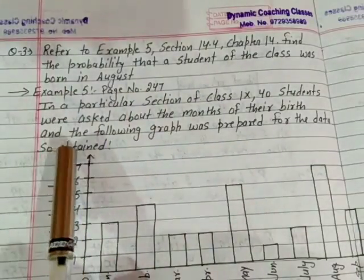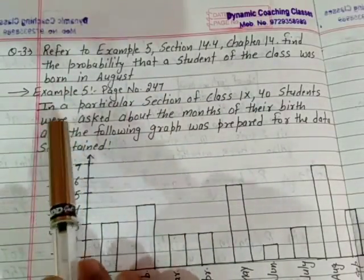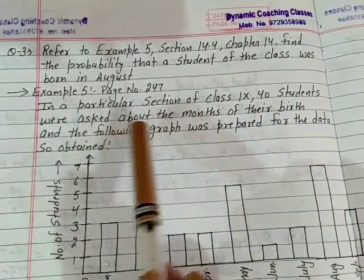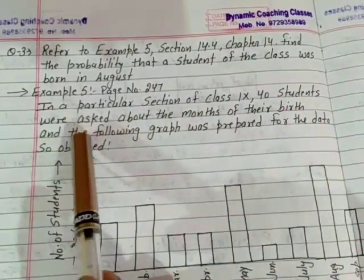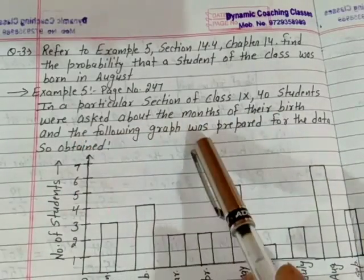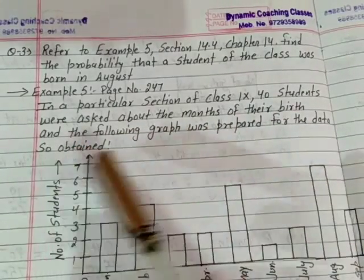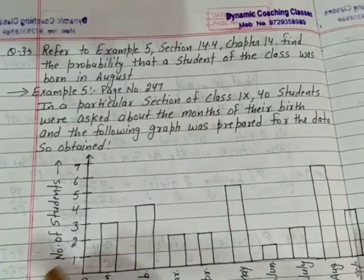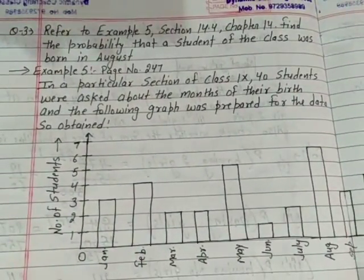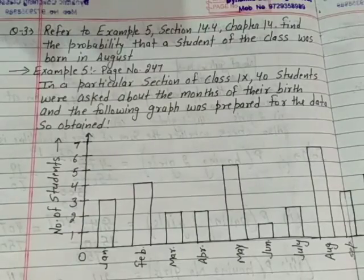So what was done? In a particular section of Class 9, 40 students were asked about the month of their birth, and the following graph was prepared for the data obtained. So it was Class 9 with 40 students — they were asked what month they were born in.